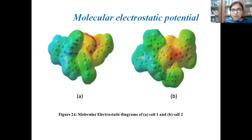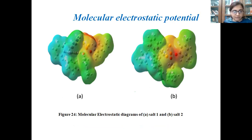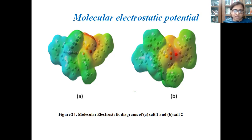Then comes the molecular electrostatic potential (MEP) diagram, which can also be determined using computational analysis. This is a color diagram used to determine the sites for nucleophilic and electrophilic attacks in the molecule. The red region indicates high electron density and thus the site where an electrophile can attack, while the blue region indicates lower electron density and hence the region for nucleophilic attack.